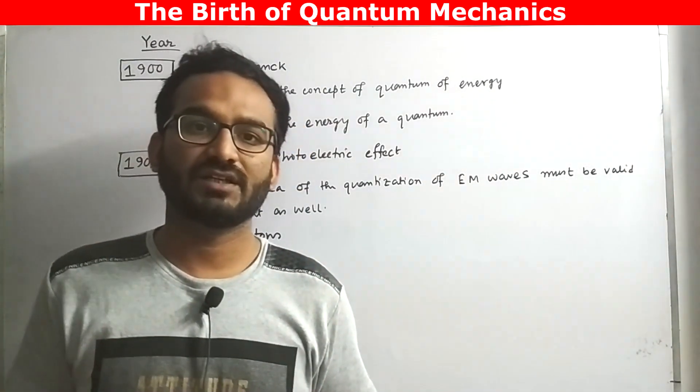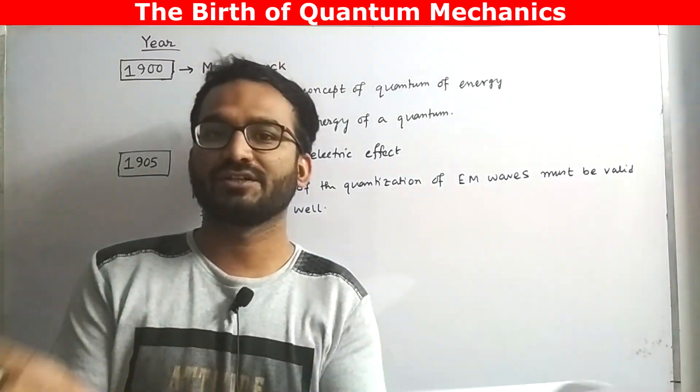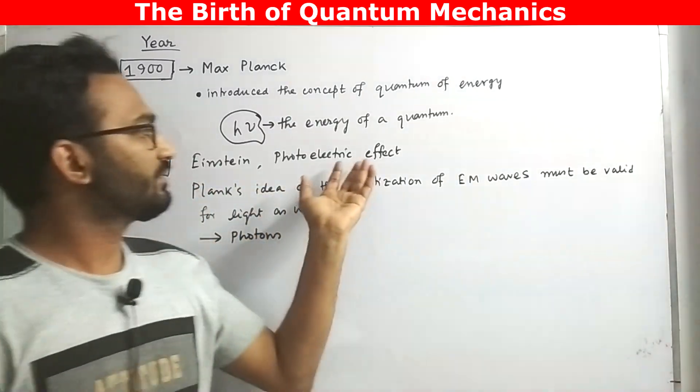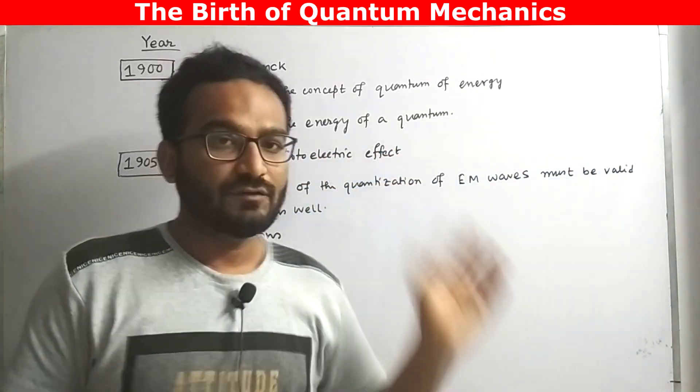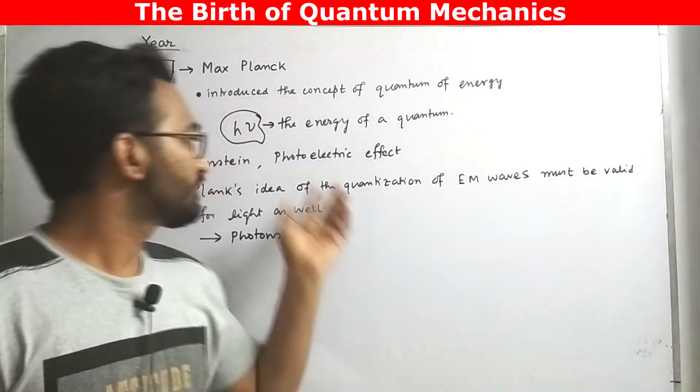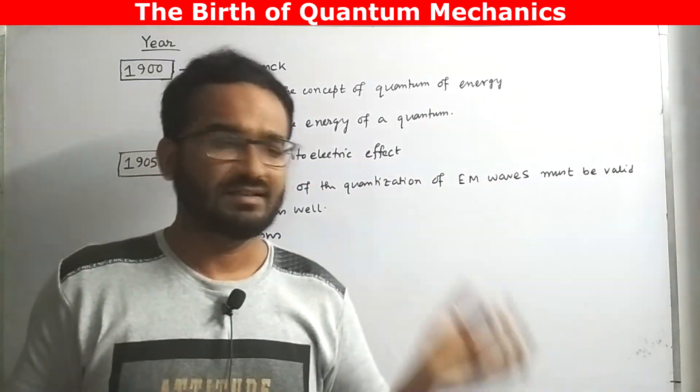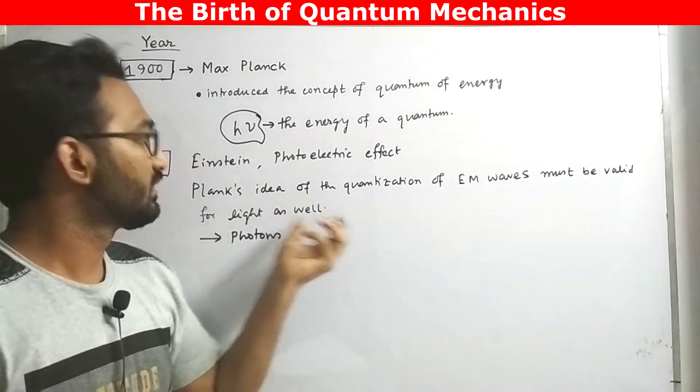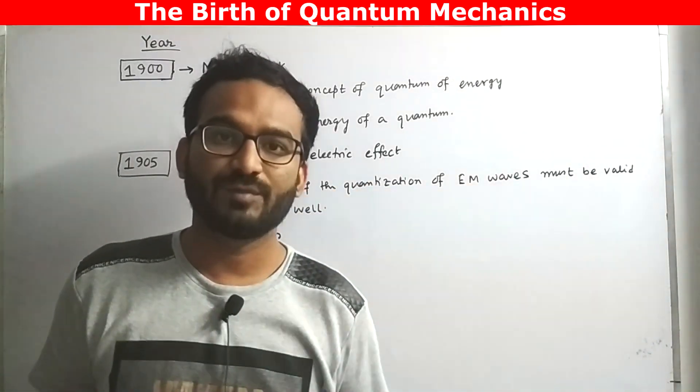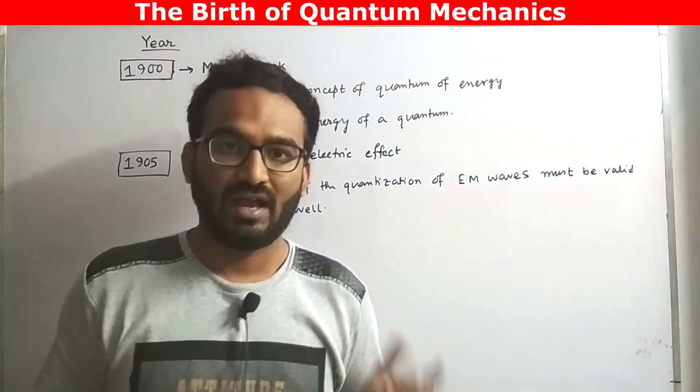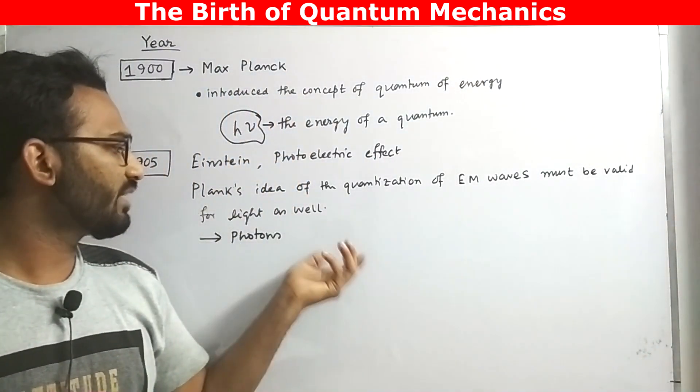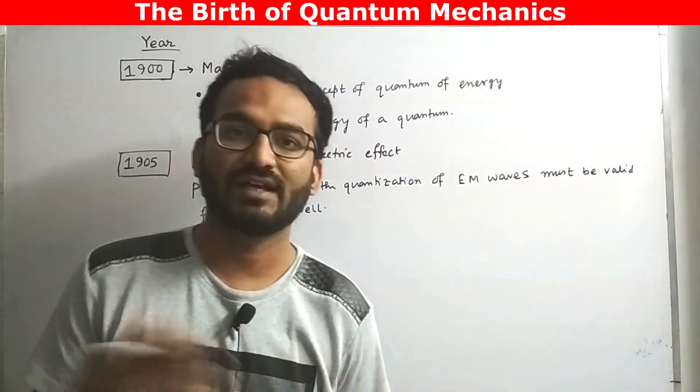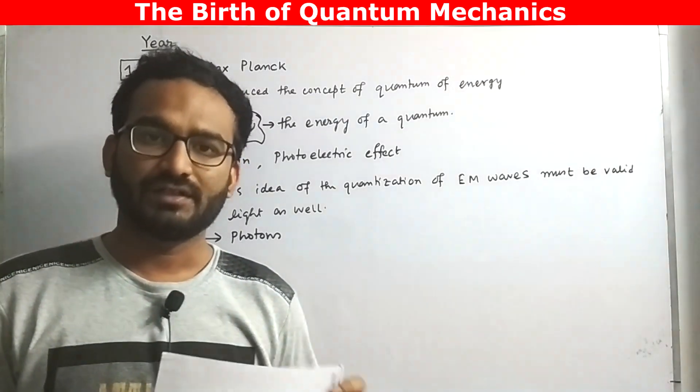This was a completely new idea to quantize energy. After that in 1905, Einstein while trying to find out the real reason for photoelectric effect, he found out that the idea or concept of Max Planck's quantization of EM waves must be valid for light waves as well. And by considering that he found the mechanism of photoelectric effect and for that discovery he was awarded Nobel Prize.